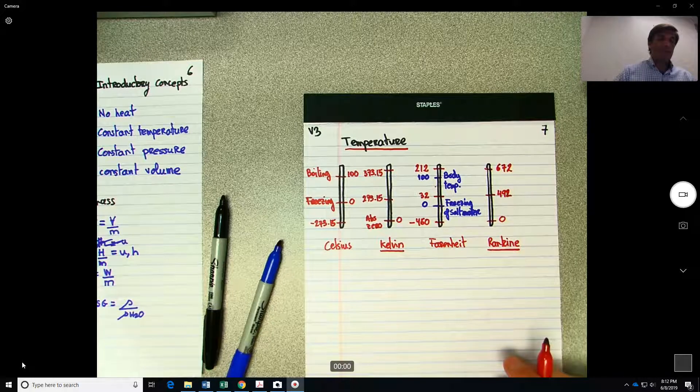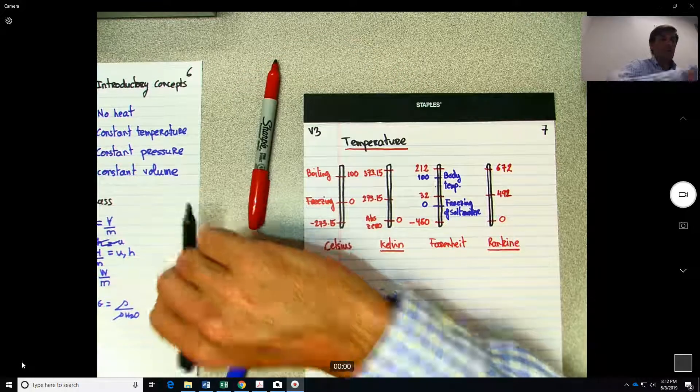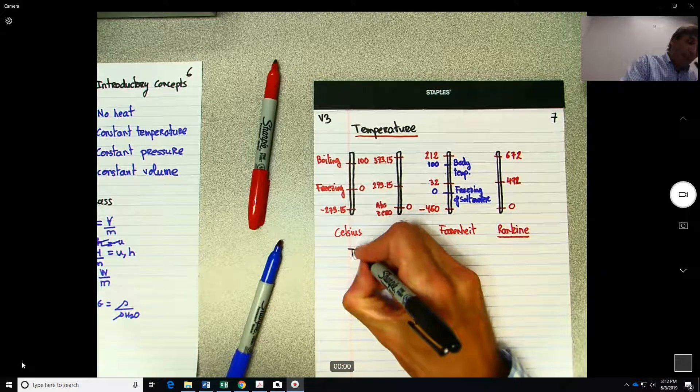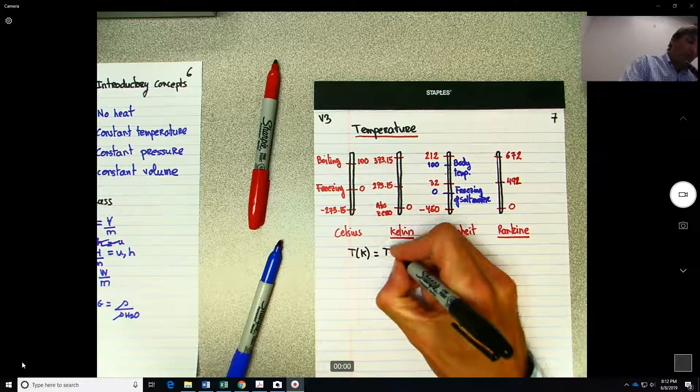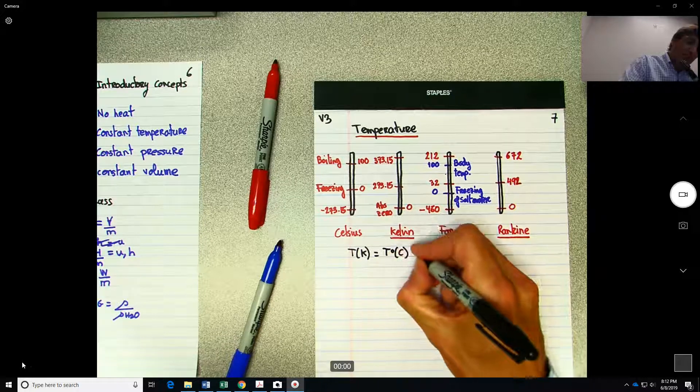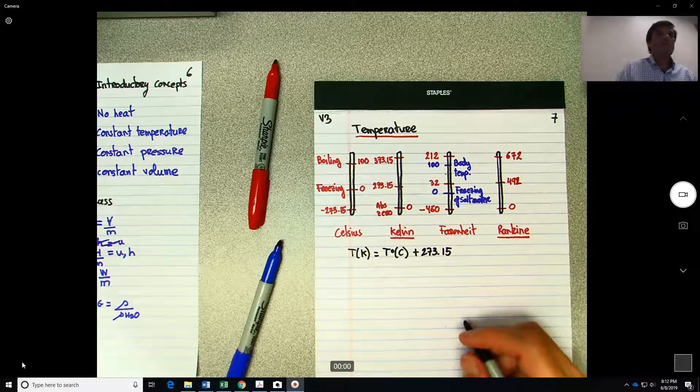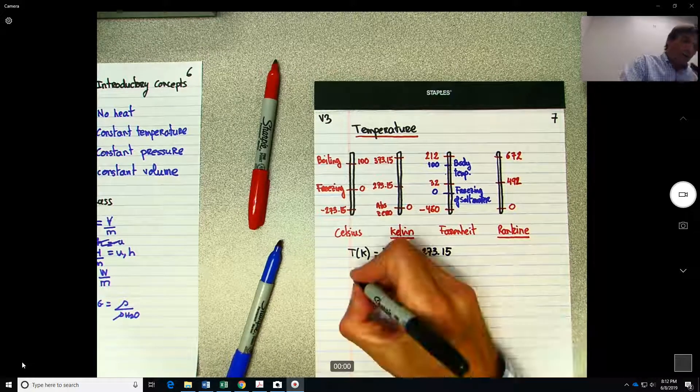So how do you go from one scale to the other? So if you have the temperature in Kelvin, that one is very easy. You get your temperature in Celsius and you will add 273.15.